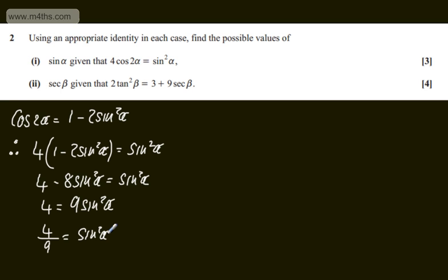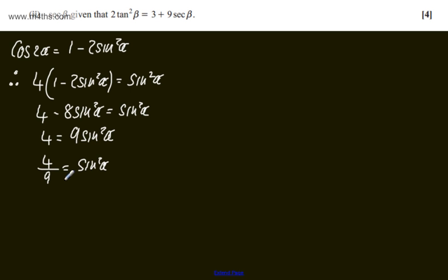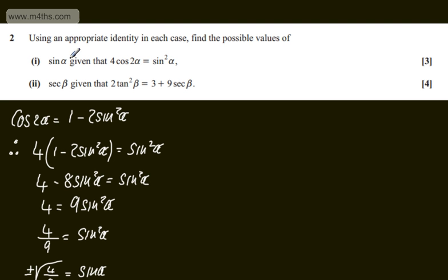We need possible expressions for sin α, so I'm going to square root both sides of this equation. Plus or minus the square root of 4 over 9 equals sin α. So sin α will be plus or minus 2 over 3. Both are clearly valid since sin α is between 1 and minus 1, so both are perfectly valid solutions.